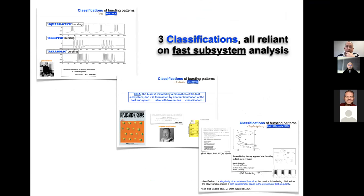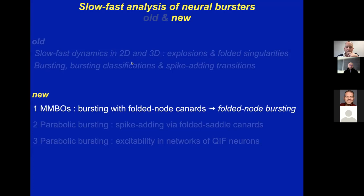These seminal approaches rely heavily on analysis of the fast subsystem and its bifurcation structure. What I would like to discuss in the remaining time is that one can also look at the slow subsystem, which may give complementary information. I will now give examples of what I've done with collaborators to construct new types of bursting oscillations by mixing fast and slow subsystem analysis.